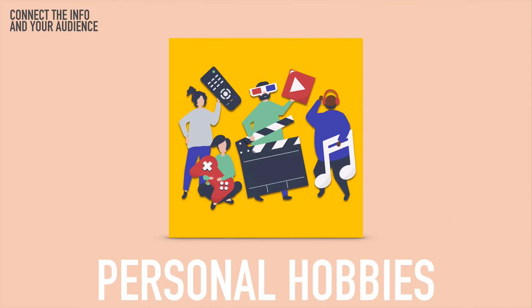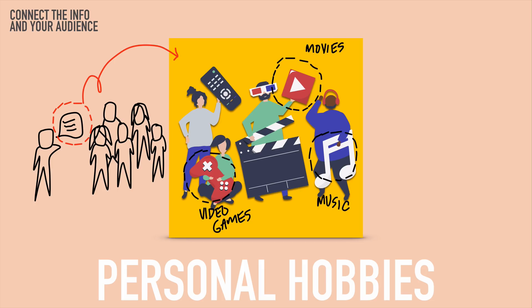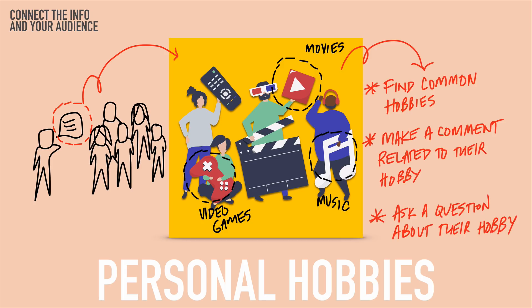Let's see this in some examples. If you're speaking about personal hobbies in a conversation and you have to give your opinion, you can think about the hobbies of the individuals you are speaking to. Maybe they like video games, movies, or music. Use that information to find common hobbies between yourself and the person you're speaking with, or make a comment related to their hobby, or ask a question about it — connecting the information to the person you're speaking with will improve your confidence.